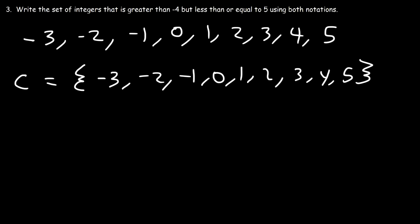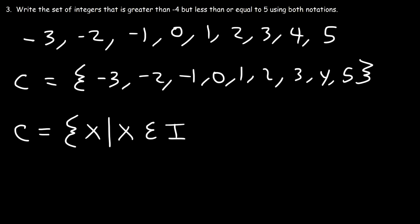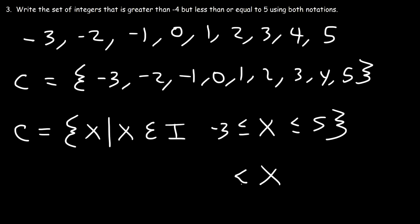In set-builder notation, C is the set of all X such that X is an integer — I'll use I to represent integer. It's between negative 3 and 5, or we could say X is greater than negative 4 but less than or equal to 5. Both ways work.